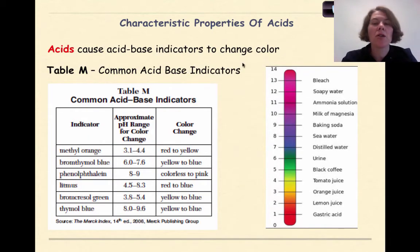Acids cause acid-base indicators to change colors. And we're going to talk about how to use Table M in more detail in the future. Table M describes common acid-base indicators in your reference table. So we'll see everything from methyl orange to phenolphthalein to bromocresol green and thymol blue. And each of these has a pH range, which again, we'll talk about in more detail. And then we'll see a color change. And what these color changes can tell us, as we see over here, is whether something is acidic or basic. Ultimately, what we'll learn in the future is that our most acidic pHs are around 0, and our more basic pHs are around 14.